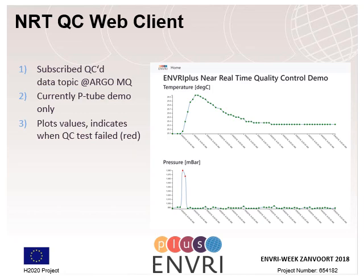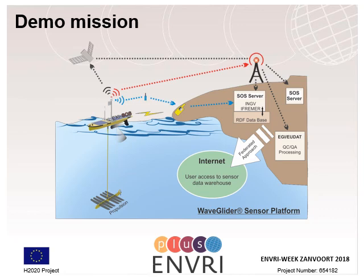In the future, we aim to use this topology and architecture also for a demo mission we have started within Work Package 3. In January or February 2019, the Marum Wave Glider will be deployed to collect data in the Atlantic Ocean. We will use this mission to transmit data in a standardized way and to use the quality control chain we have introduced, setting up a dedicated topic for this demo mission.